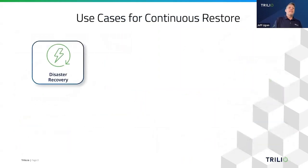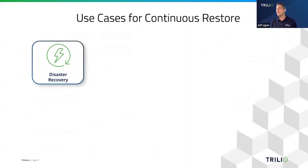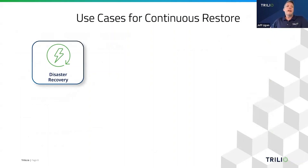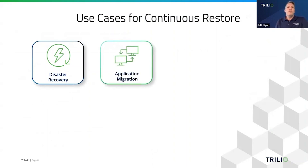With continuous restore, what would that enable your business to do better? Disaster recovery is number one — just reducing that recovery time by as much as possible, so you're able to quickly recover from a disaster that happened in the first cluster.